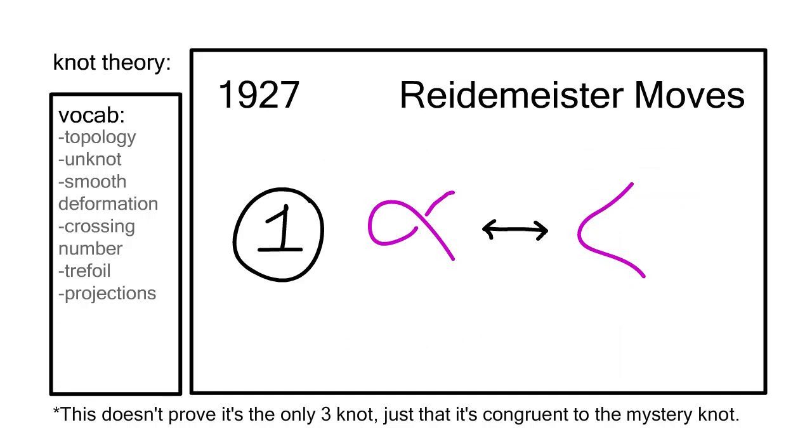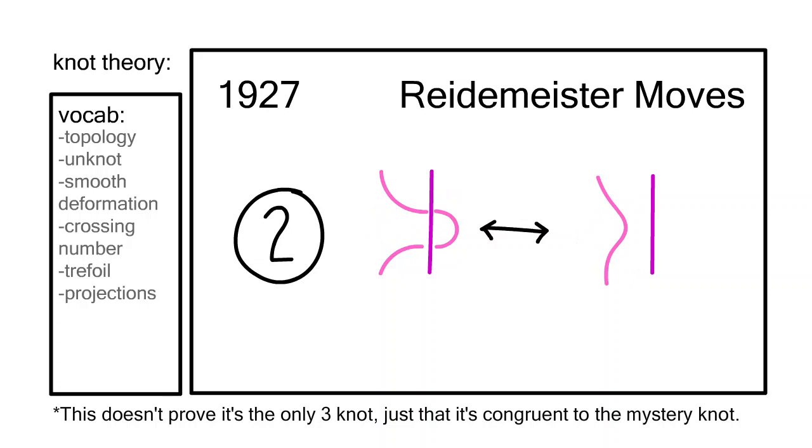The first is a simple twist. The second is moving one string over or under another. And the final, most complicated move is to move a string over or under a crossing.